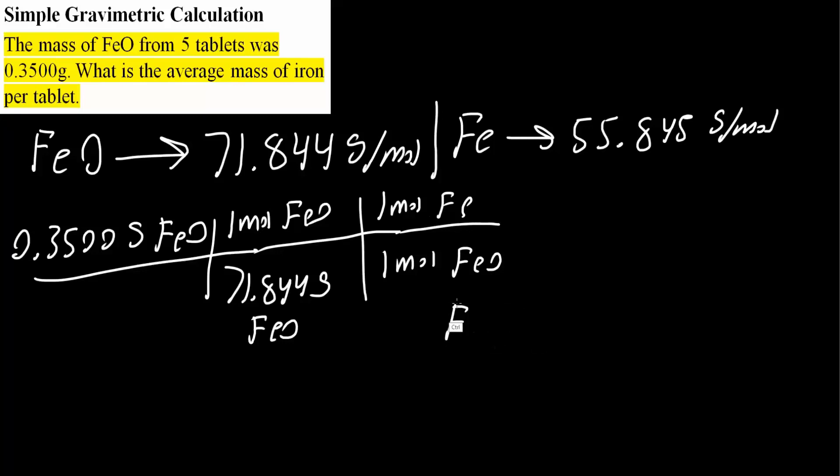From here we would convert moles of Fe into grams. We know that one mole of Fe contains 55.845 grams, so this is the total grams of iron. But we want to know what is the average mass of iron per tablet. We have five tablets, so we would divide by five.